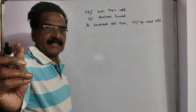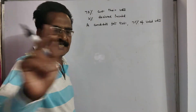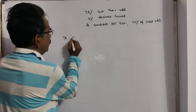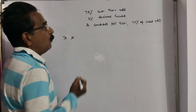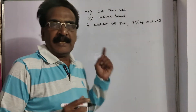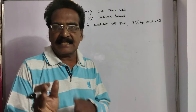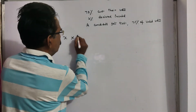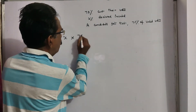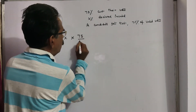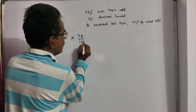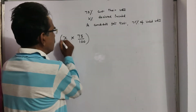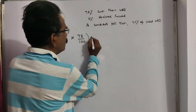Let the number of voters enrolled be X. Now, only 75% of the voters cast their votes, so the number of poll votes is 75% of X.